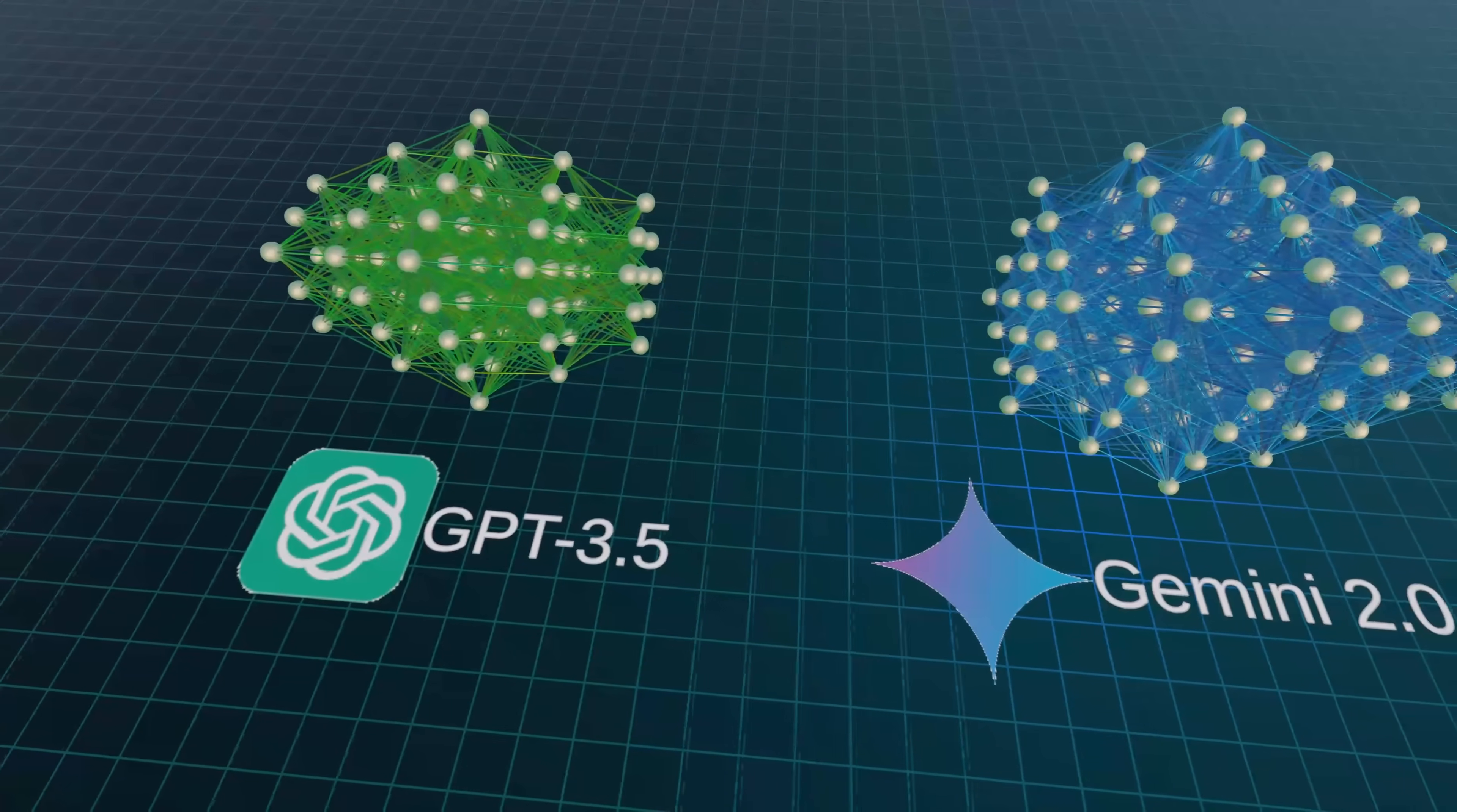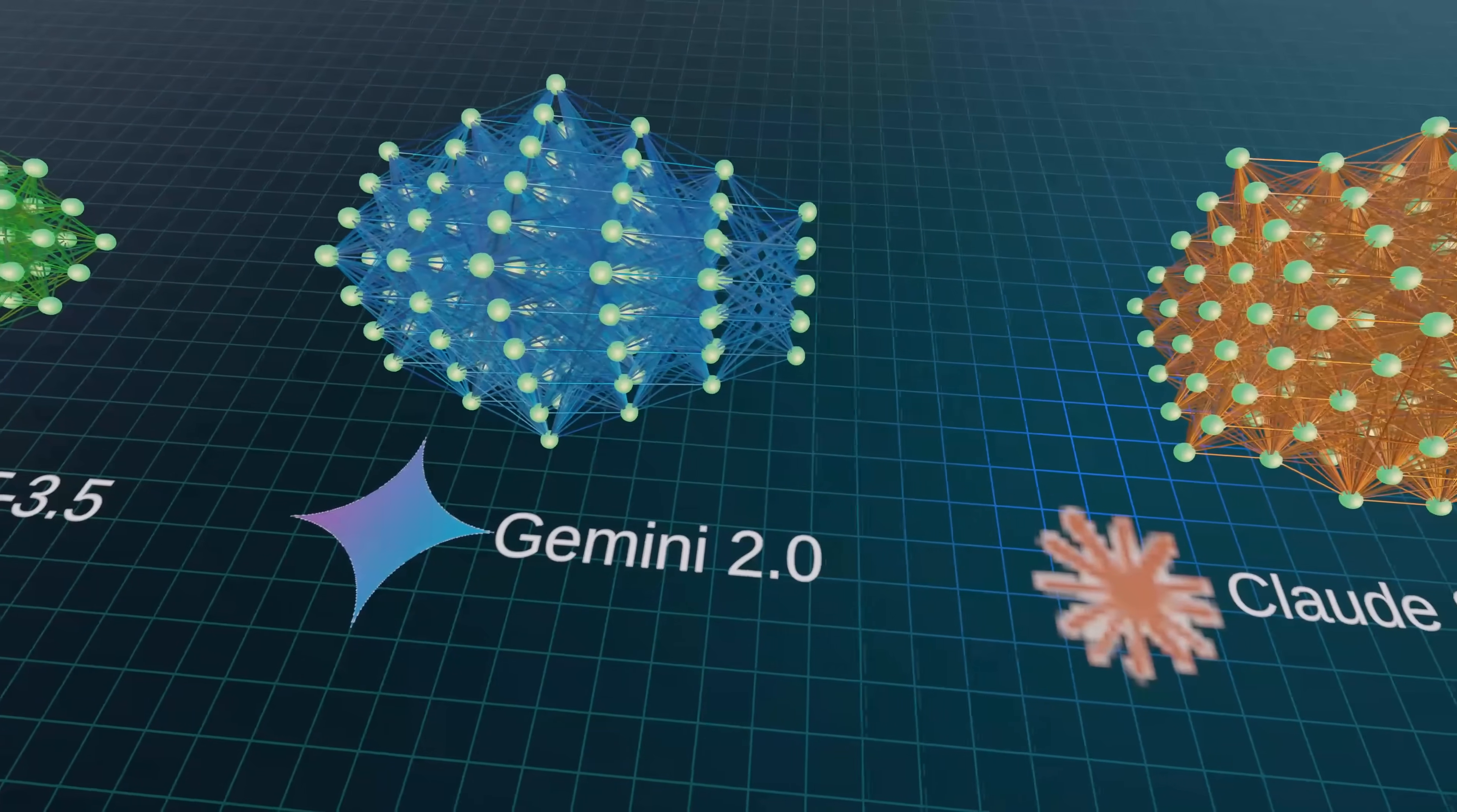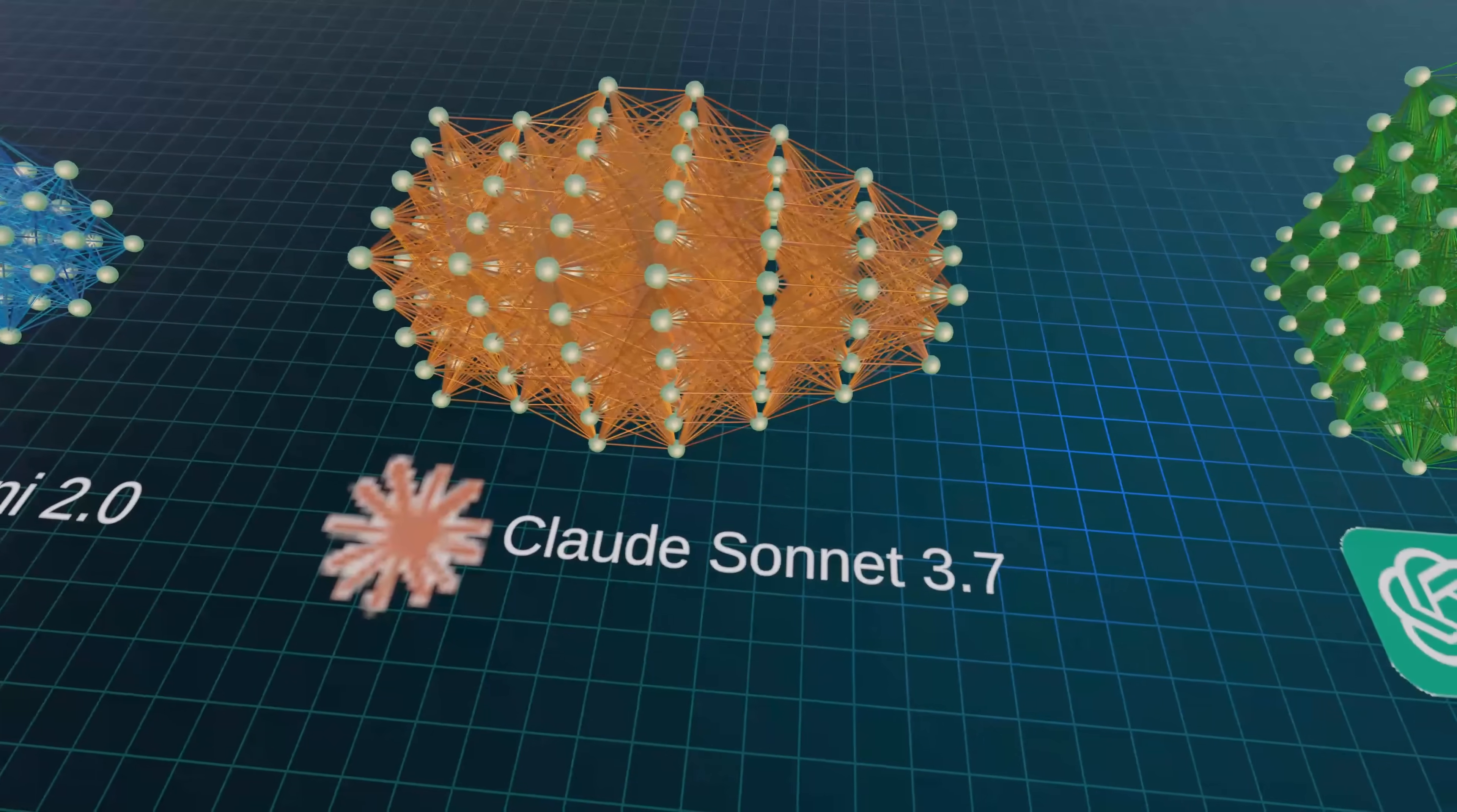Large language models have gotten so good that by now virtually everyone agrees that they are going to fundamentally change society. And each new generation of LLMs is bigger and better than the previous. It seems obvious that just by scaling up the size of these models, they will keep getting better and better, and eventually surpass human intelligence.